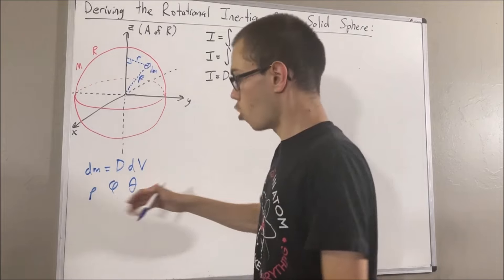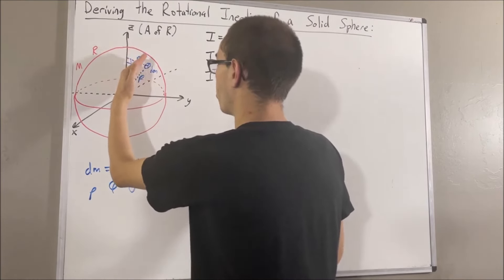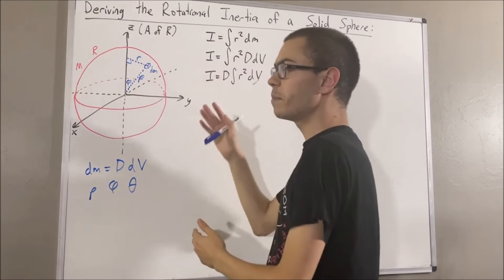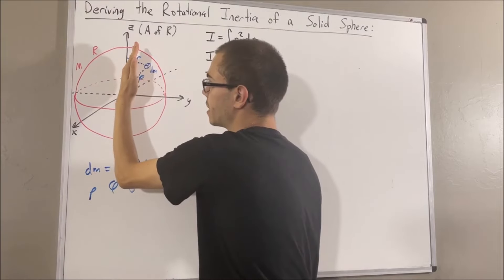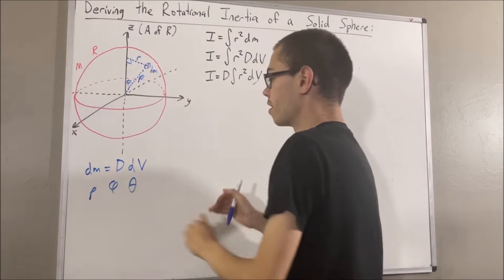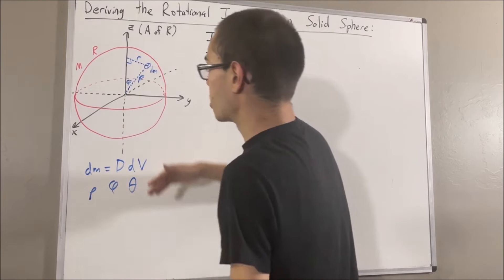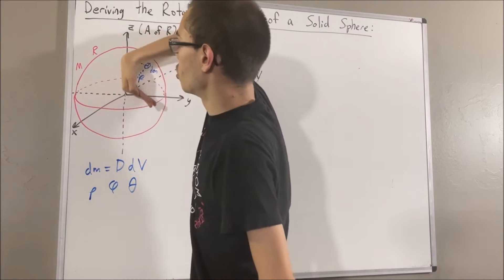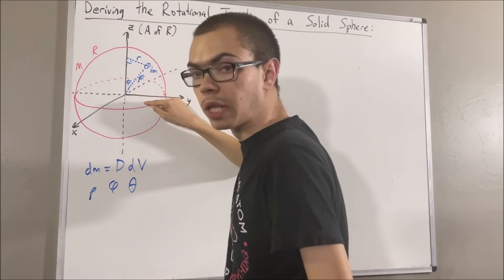Phi represents the angle from the positive z-axis to our differential mass. Keep in mind, phi can range anywhere between zero radians and pi radians. And theta represents the angle measured from the positive x-axis counterclockwise to the projection of our differential mass onto the xy plane.